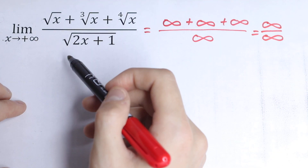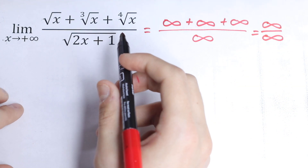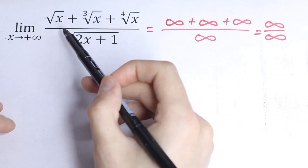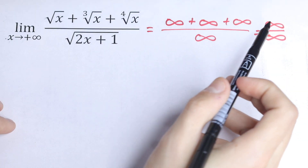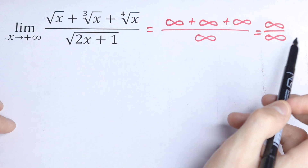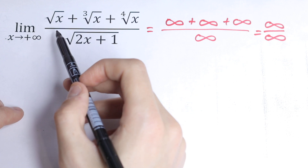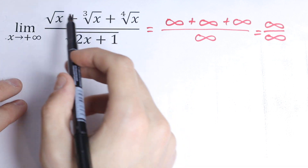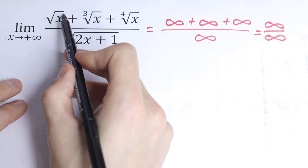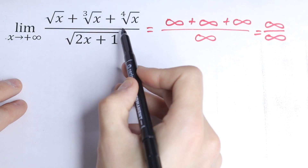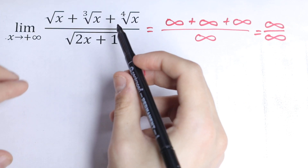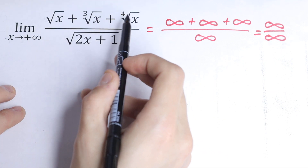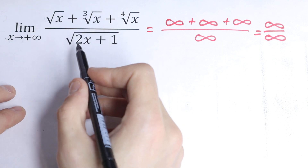So we need to simplify this a little bit — we need to cancel this infinity. I want to suggest the best trick for solving this kind of limit with square roots when we have infinity over infinity. We need to divide the numerator and denominator by the highest power of x. Here we have x to the power one-half, one-third, one-fourth, and one-half, so the highest power is x to the one-half.